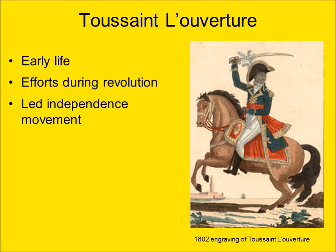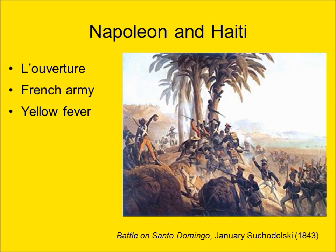Louverture made himself governor for life of Saint-Domingue. It was at this point that Napoleon Bonaparte, who took power in 1799, decided to reclaim the former colony. Napoleon initially acknowledged Louverture as governor but sent French troops to Haiti. Louverture was tricked into believing Napoleon's promises, then was captured, sent to France in chains, and died in a French prison. However, the large army Napoleon sent to Haiti was defeated by Haitian forces, assisted significantly by the viral disease Yellow Fever, to which French troops had no immunity. It is in part due to this defeat that Napoleon agreed to the Louisiana Purchase of 1803 with the United States.